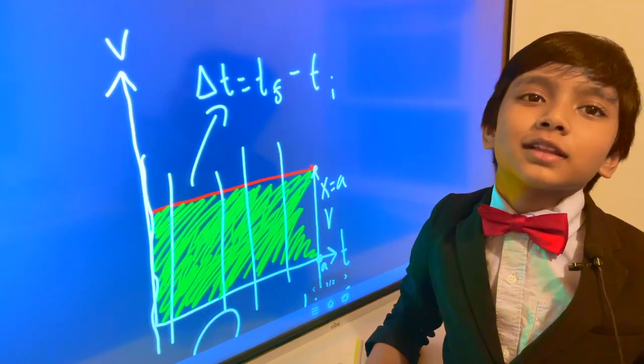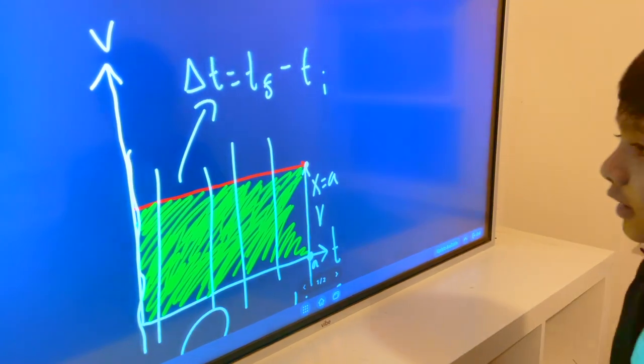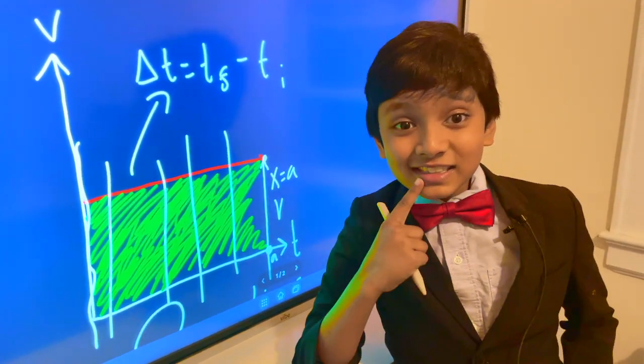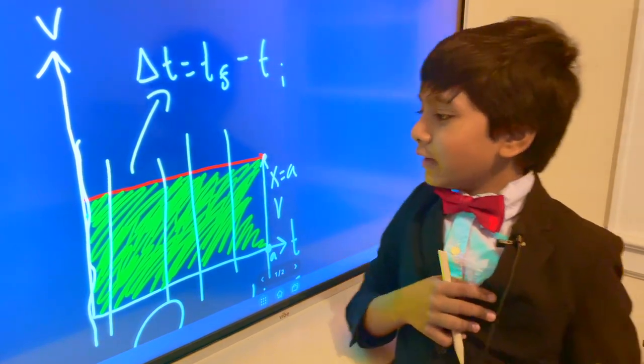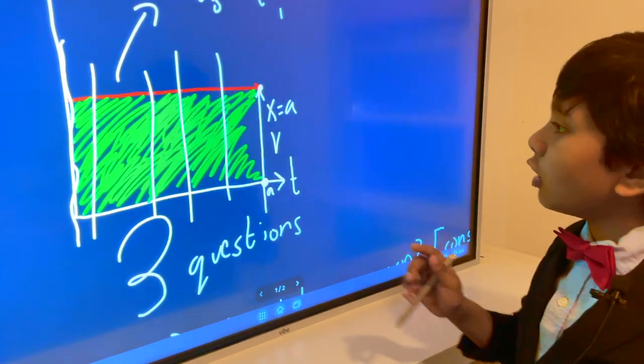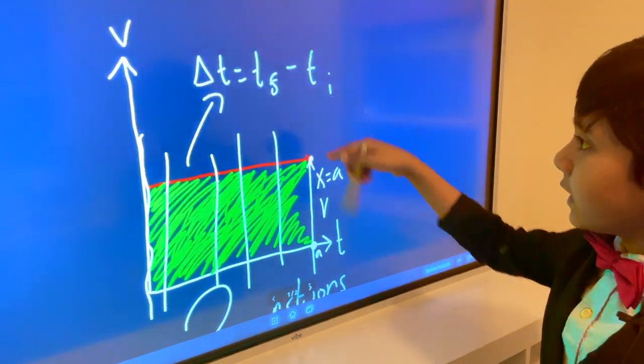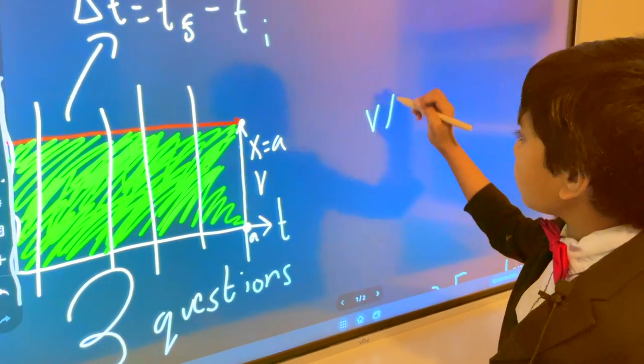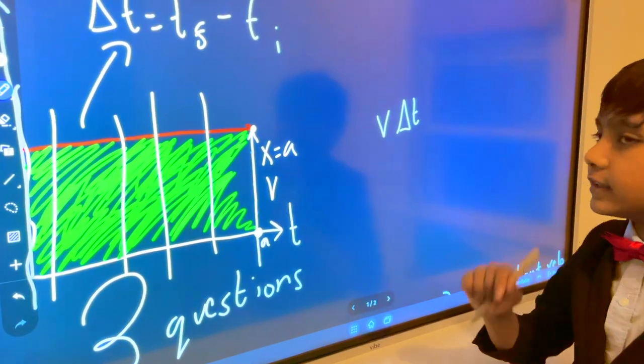And then I'm going to put a backwards clip here. Sorry about that, time flew backwards. Anyway, let's look at what we have over here. Now we know that delta t and v, so the area of this, or the green shade, is v delta t.